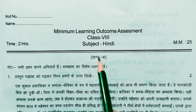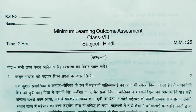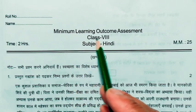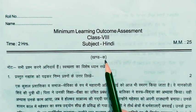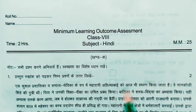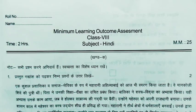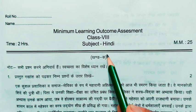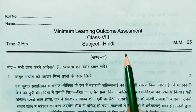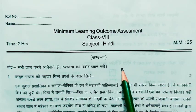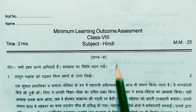Class 8 में Hindi, English, Maths और Science इन 4 subjects का Minimum Learning Outcome Assessment होना है। यहाँ पर आपको केवल English के बारे में बताएंगे। Hindi, Maths और Science का नहीं — केवल English। यह 25 नंबर का एक subject है — 25 नंबर Hindi, 25 नंबर English, 25 नंबर Maths, 25 नंबर Science। नई शिक्षा नीति के अंतर्गत इसका एक assessment, एक evaluation, एक परीक्षा हमारे यहाँ Class 8 की हुई थी।